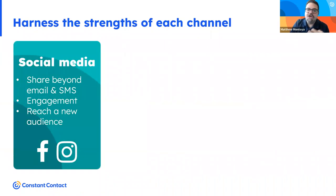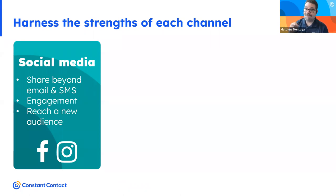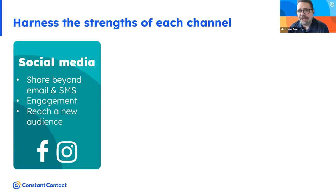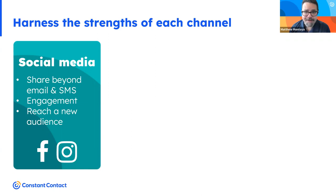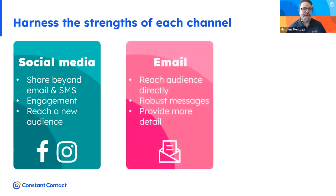Social media is great for sharing beyond email and SMS and reaching a new audience. One thing to be aware of: if you've put all your eggs in the social media basket, you may not be reaching the audience you think you are, because social media has algorithms — sometimes they show your content, sometimes they don't. One way around that is to encourage engagement: likes, comments, reactions, shares. That's how you get around the algorithm.